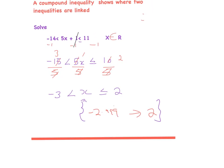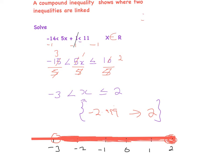Drawing a number line: minus 3, minus 2, minus 1, 0, 1, 2. Since x gets really close to minus 3 but doesn't hit it, we draw an open circle at minus 3. It goes all the way up to 2 and includes 2, so the circle at 2 is filled in. We draw a thick line between them to show the solution set. The compound inequality is solved.